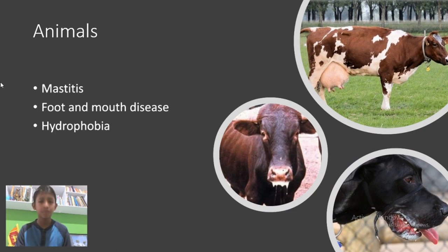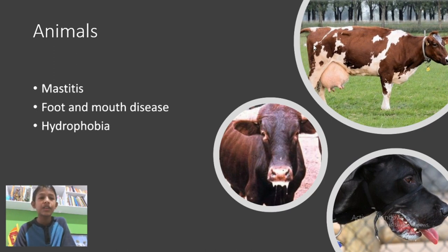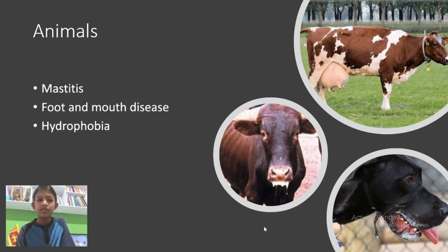What are the harmful effects that microbes cause to animals? The first one is mastitis, which you can see in this cow. The second one is foot and mouth disease. The third one is hydrophobia, which you can see in this dog.